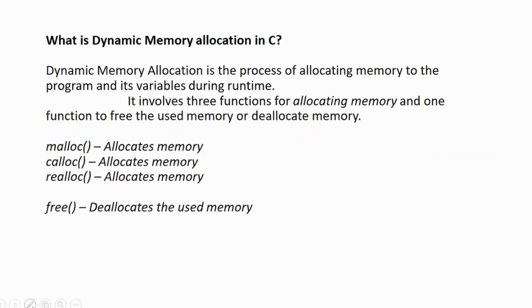First question is, what is dynamic memory allocation in C? The answer is, dynamic memory allocation is the process of allocating memory to the program and its variables during runtime. It involves three functions for allocating the memory and one function to free the used memory or deallocate it.